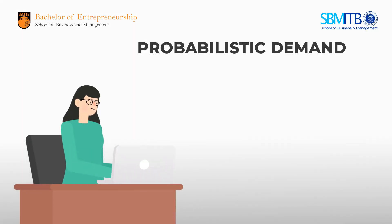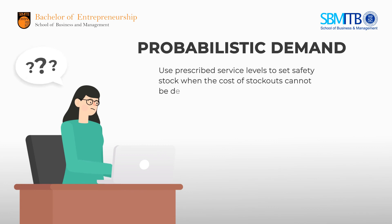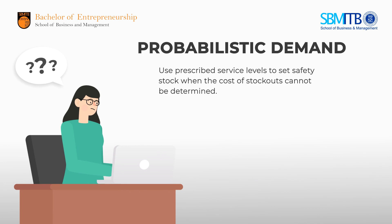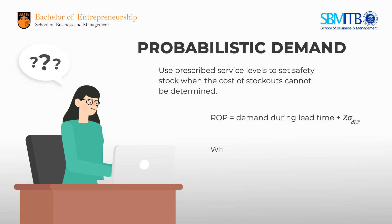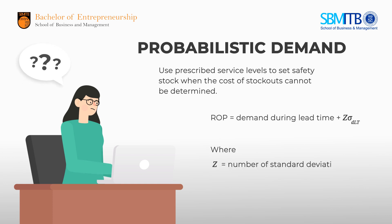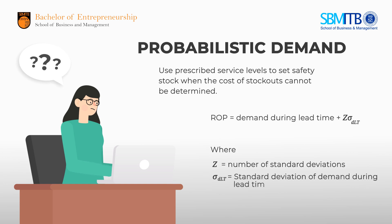For probabilistic demand, use prescribed service levels to set safety stock when the cost of stockouts cannot be determined. The reorder point is the expected demand during lead time plus safety stock, where safety stock equals the number of standard deviations (Z) multiplied by the standard deviation of demand during lead time.